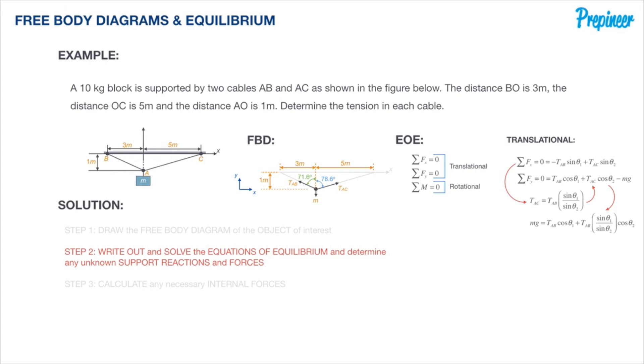Now that we have this new equation, we only have one unknown because we know the mass and gravity. What we can actually do is rearrange, isolate T_AB, and plug in all of our information. We're going to get the answer 193.5 newtons.